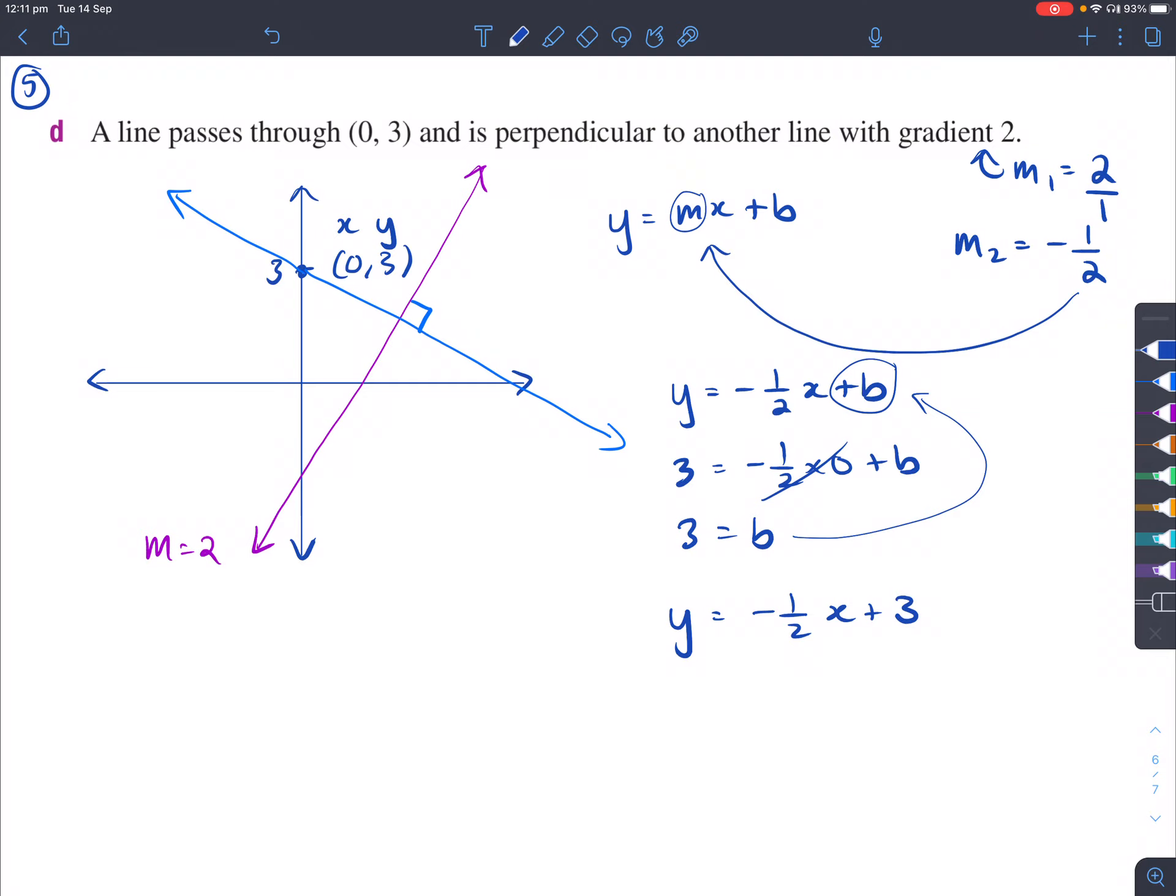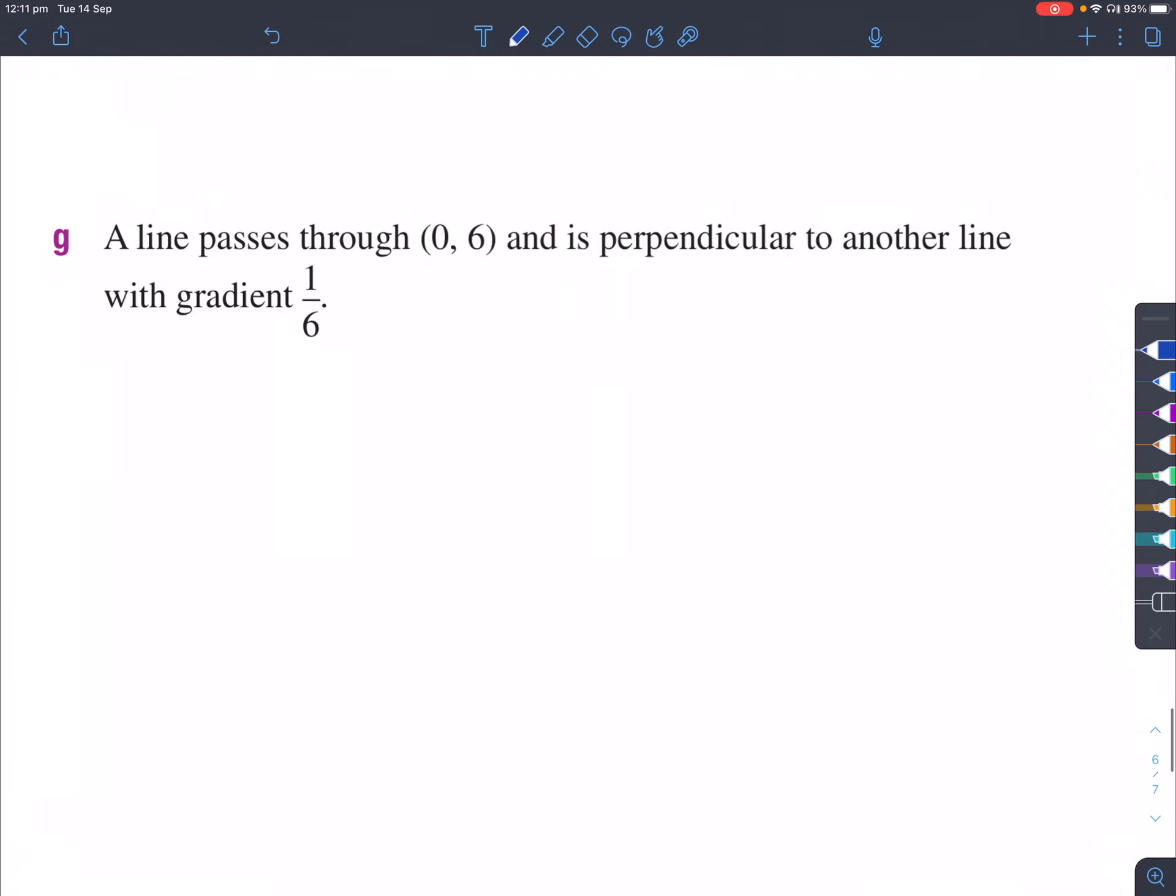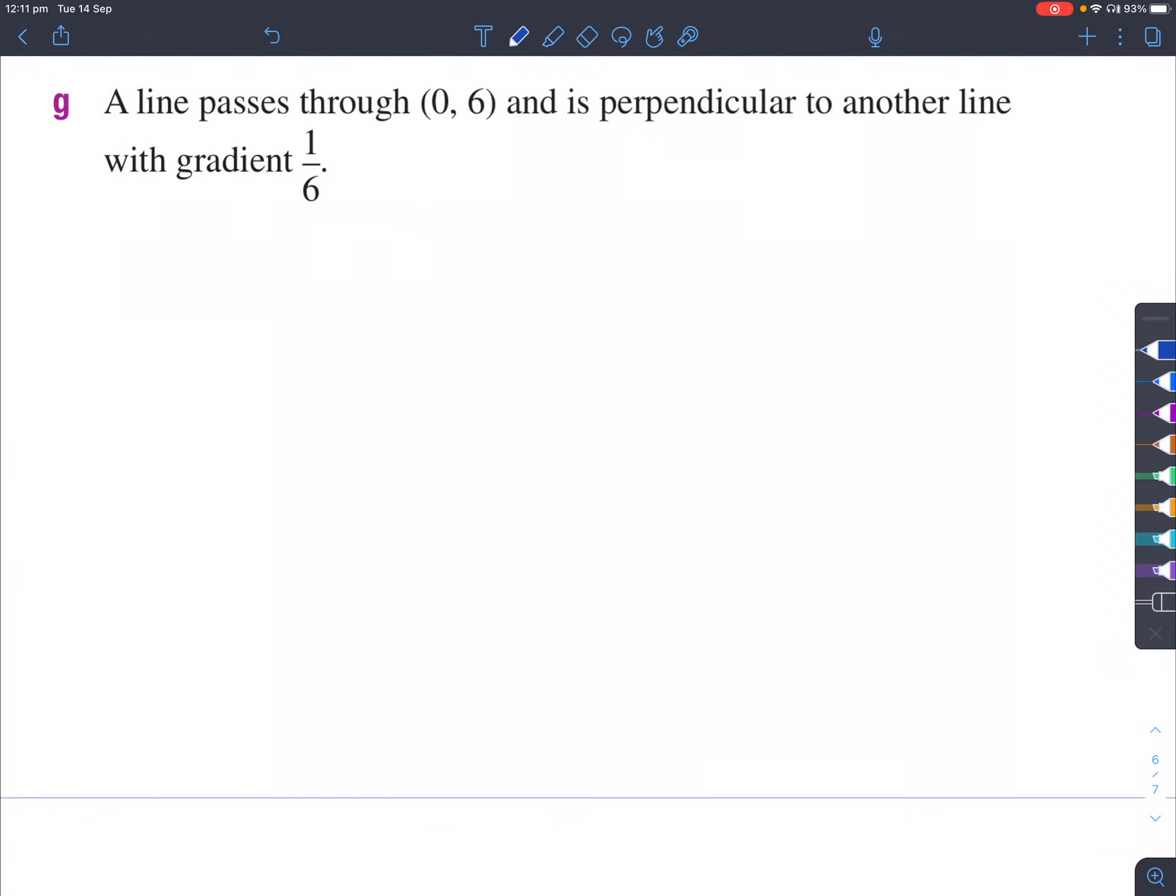Let's look at one more example. Question G. The line passes through (0,6). So (0,6) is right there. It's just 6 up from the origin. And it's perpendicular to another line with gradient 1 over 6.